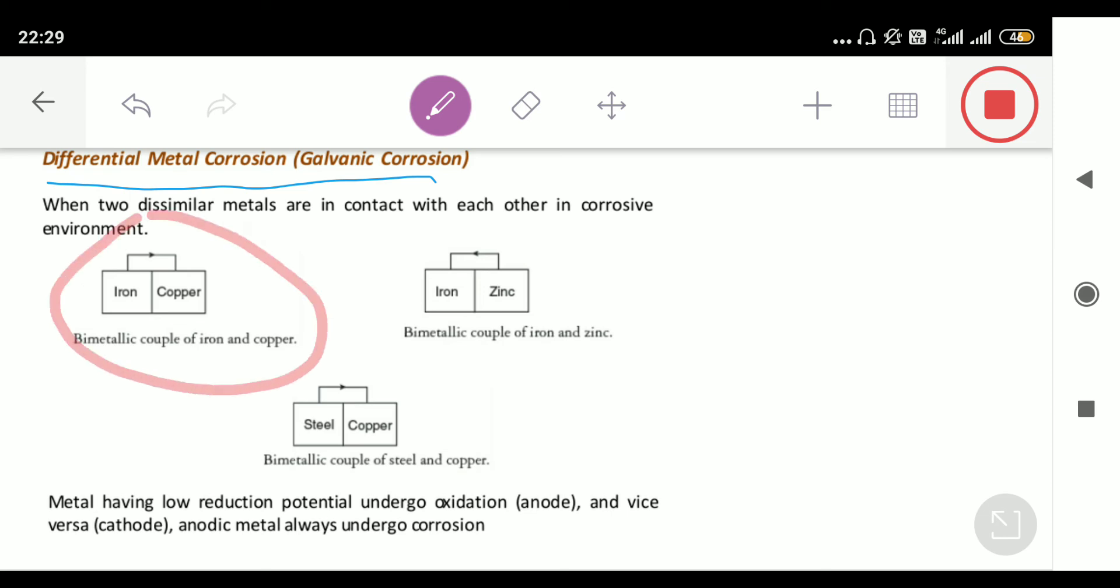We can see the example with iron and copper, where iron is kept in contact with copper. In this case, the corrosion of iron will be faster because this is differential metal corrosion. Iron is acting as anode because its EMF value is less, equals to minus 0.44 volt.